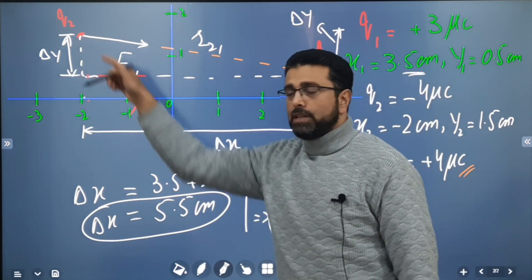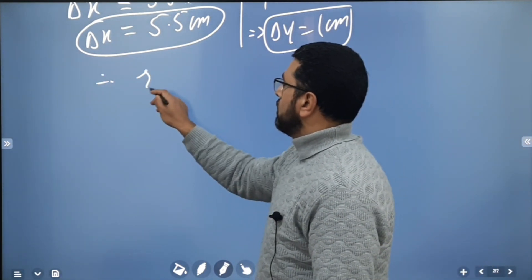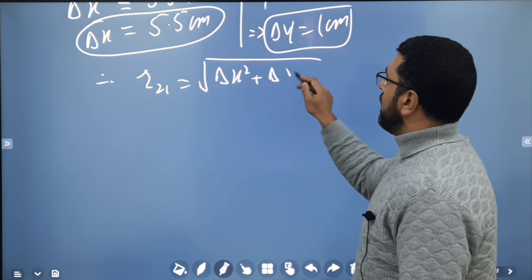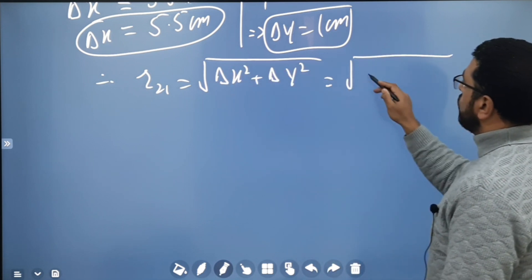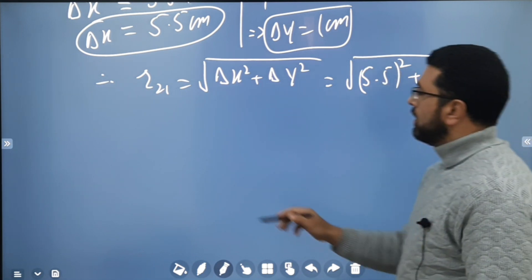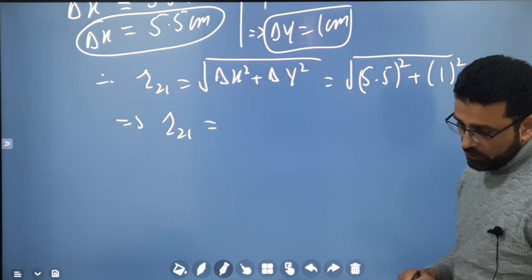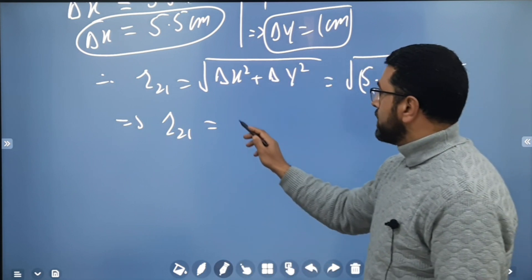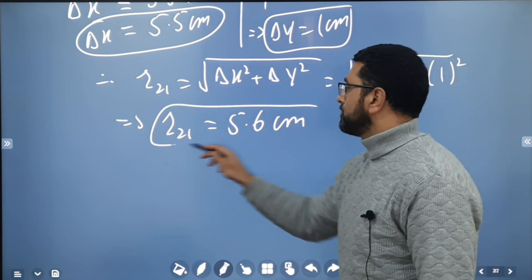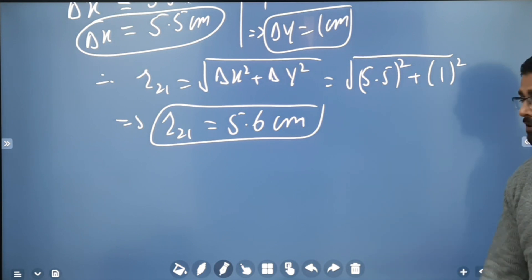Therefore, r21 equals the square root of 5.5 squared plus 1 squared. Working this out, r21 comes out to be 5.6 centimeters. So we now have the distance between the two charges.